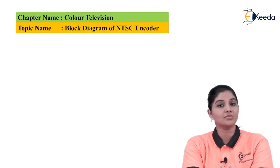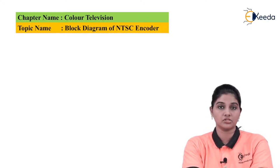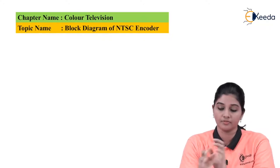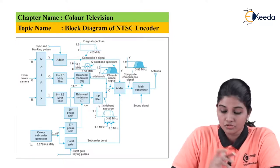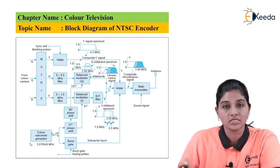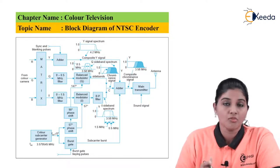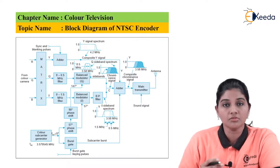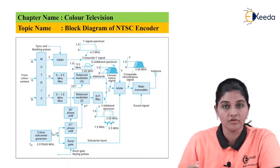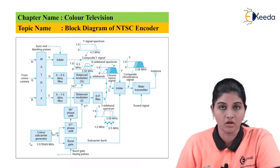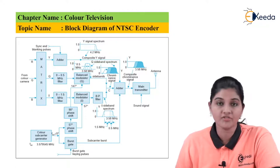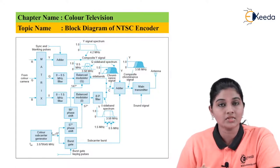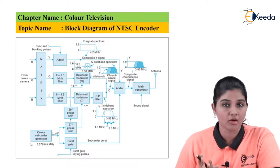Now let's move to the encoder, that means the transmitter of the NTSC system, and look at the block diagram of the NTSC encoder. In the block diagram, we can see that three signals are received as input — RGB — to the matrix. After the matrix, filters, balance modulators, adder, and main transmitter are present. Let's understand the working and description of the block diagram in detail.